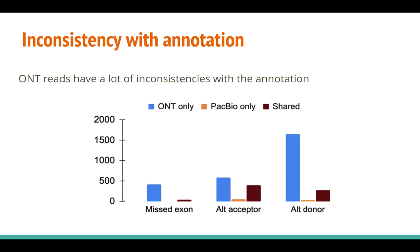Reads can be inconsistent with annotation in different ways. Here we show statistics on the most common disagreements. ONT reads shown in blue have many more inconsistencies than PacBio reads. In addition, we have a number of events supported by both platforms, shown in brown, suggesting that these inconsistencies may be real.